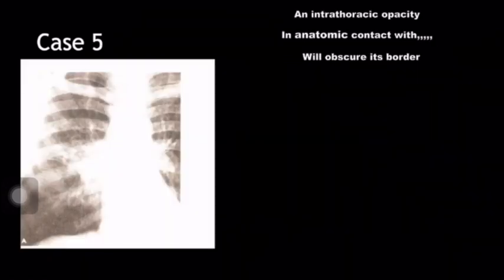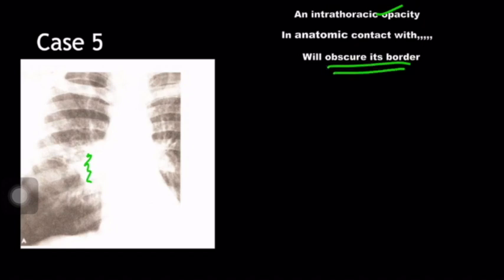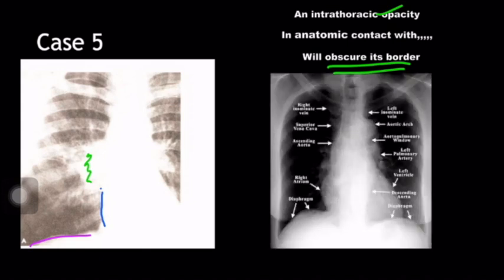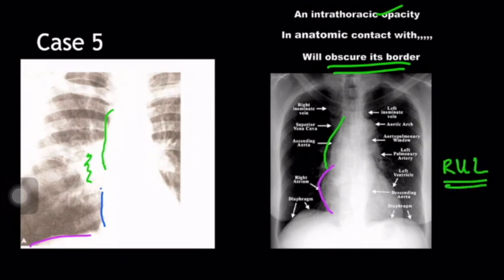Coming to case 5 — there is an intrathoracic opacity. The right diaphragm is intact. The right lower heart border is intact. Going by the anatomy, the lower part of the right mediastinum border is formed by the right atrium and further up by the ascending aorta. You can see that the lesion is obscuring the ascending aorta. The ascending aorta being an anterior structure, any lesion within the anterior part can obscure it. So you can localize it to the right upper lobe, to be specific, the anterior segment.